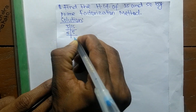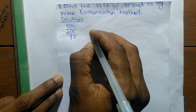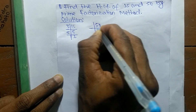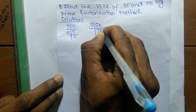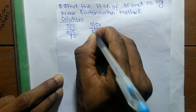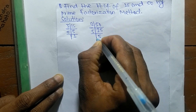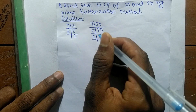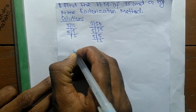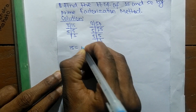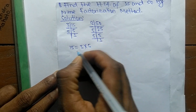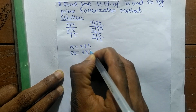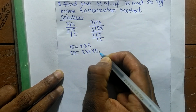Now the prime factors of 50: it is 2 times 25 equals 50, and 5 times 5 equals 25, and 5 times 1 equals 5. From these prime factors we can write: 15 is equal to 3 times 5, and 50 is equal to 2 times 5 times 5.